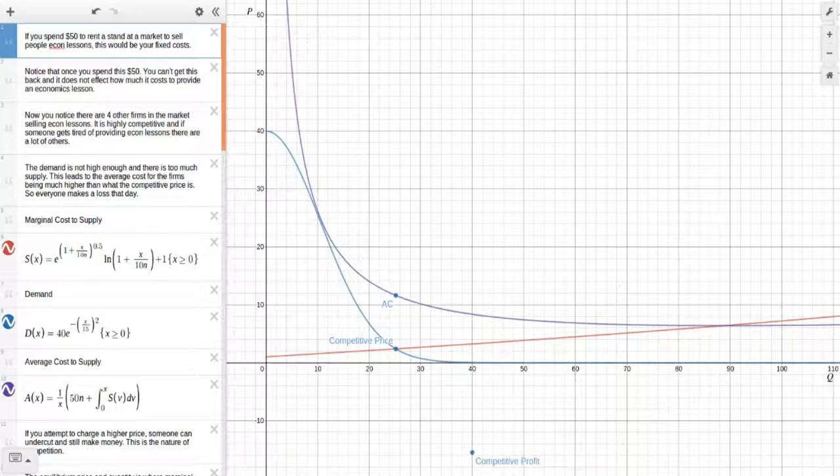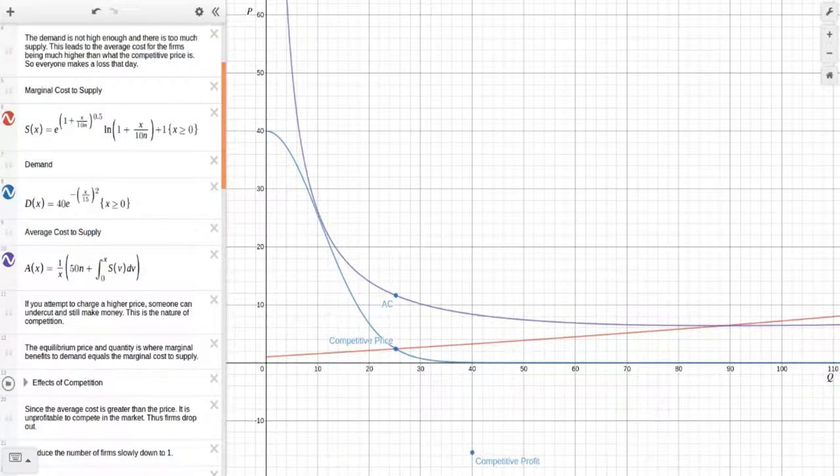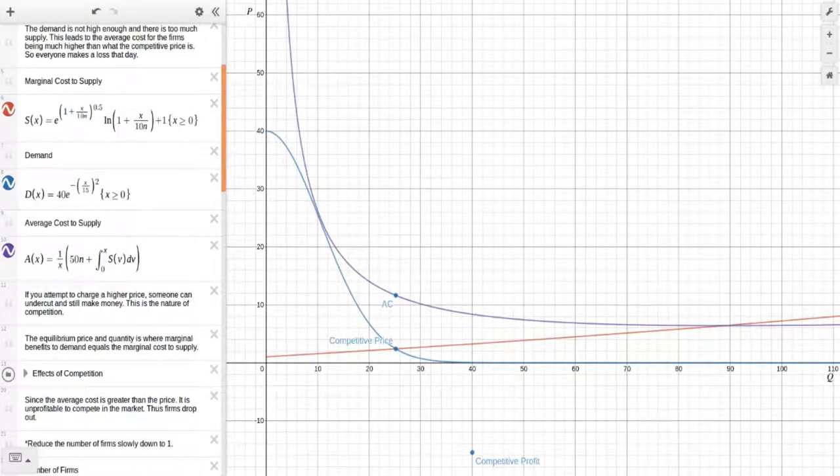The red line is our marginal cost to supply, the blue curve is our demand curve and our purple curve is an average cost to supply curve. You have your fixed cost plus all the other costs that you incurred in producing economics lessons, average. Now if you attempt to charge a higher price, someone can undercut you and still make money. This is the nature of competition. The equilibrium price and quantity is where marginal benefits to demand equals the marginal cost to supply, which we can see right there by the intersection of those two curves and meeting at the competitive price point. Since the average cost is greater than the price, it is unprofitable to compete in the market. Thus firms drop out.